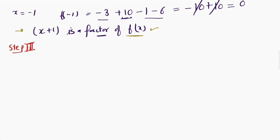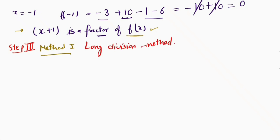Now we have to find the other two factors. We can find them by two methods. Method 1 is the long division method. Since (x + 1) is a factor of the given polynomial, if we divide the polynomial by (x + 1) we will get remainder equal to 0.